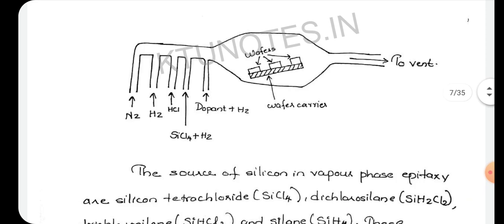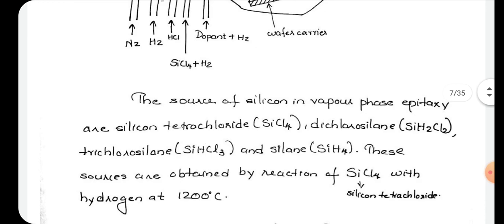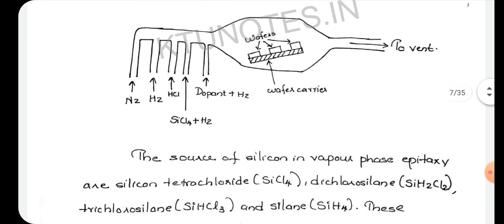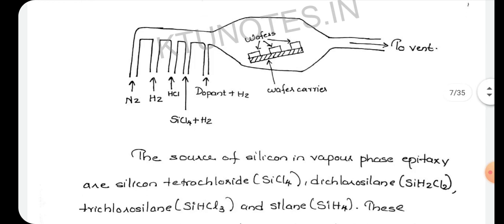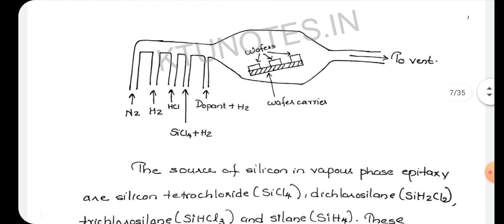The wafers are placed in a wafer carrier and that wafer carrier is sealed in a tube. The tube is heated to a temperature of 1200 degrees Celsius for the epitaxial process. The wafer carrier is tilted at an angle of 3 to 10 degrees.